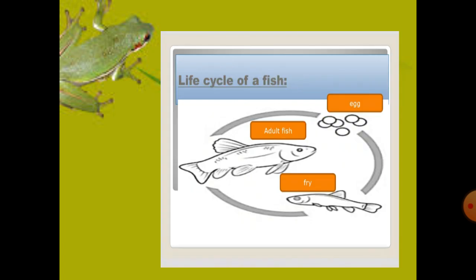Next is the life cycle of a fish. There are three stages: first, a fish lays eggs; then the fry comes out from the egg; and then the fry changes into an adult fish. This is how a fish makes copies of itself.